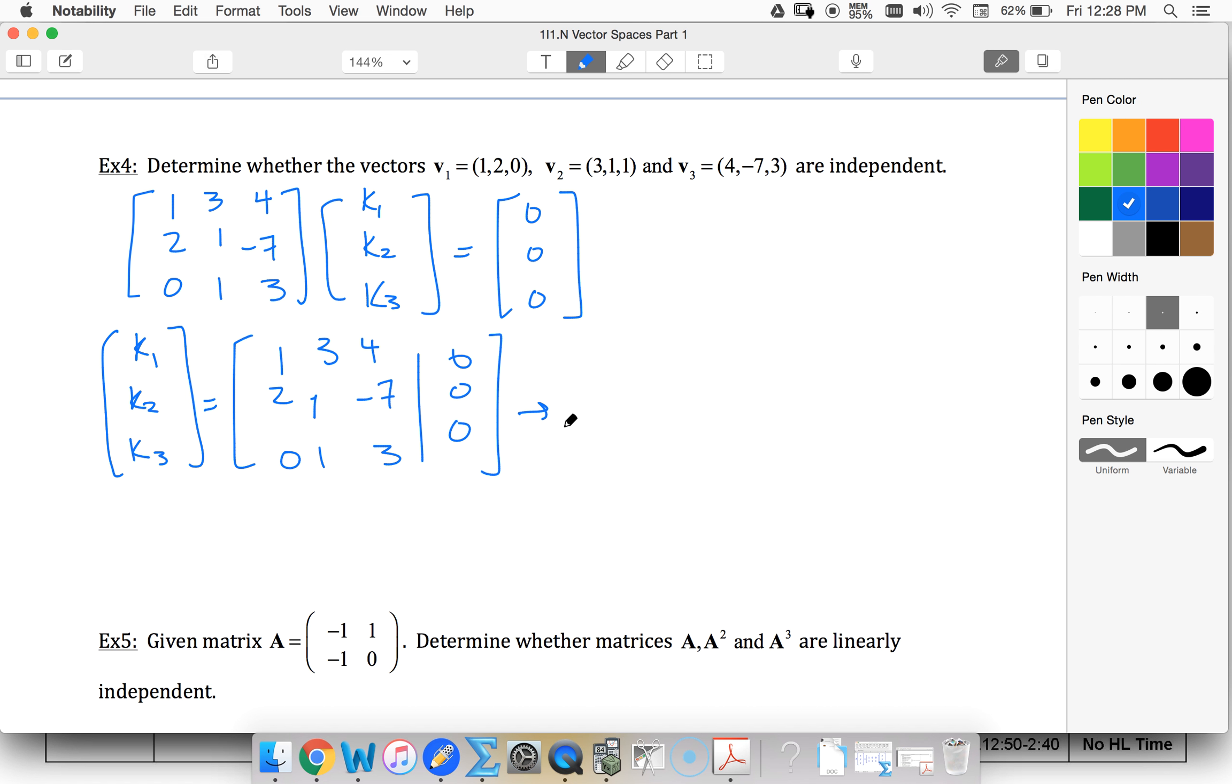I could use reduced row echelon. I can also just perform some subtraction here. So 1, 3, 4, multiply this by negative 2. That's going to give me 0, -5, -15, 0, 1, 3, 0, 0, 0. And then once again, I can end up with 1, 3, 4, 0. And then 0, 1, 3, 0. And I notice that I have a matching row.